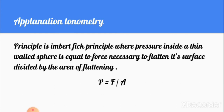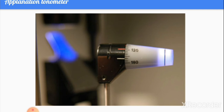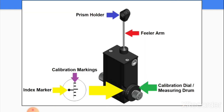Applanation tonometry is based on the Imbert-Fick principle, which states that the pressure inside a thin-walled sphere is equal to the force necessary to flatten its surface divided by the area of flattening. Here, P stands for pressure, F for force, and A for the area the probe is covering.